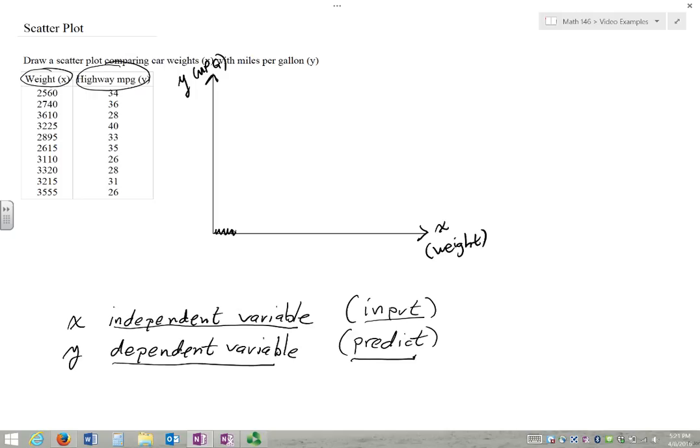And what that means is that this squiggly line here is kind of implying that the graph has been scrunched up a little bit. Because we could start at zero, but why? The lowest weight is about 2500. If I went from zero to 3600 like this, all of our weights would be in this tiny column here. There would be no point to that.